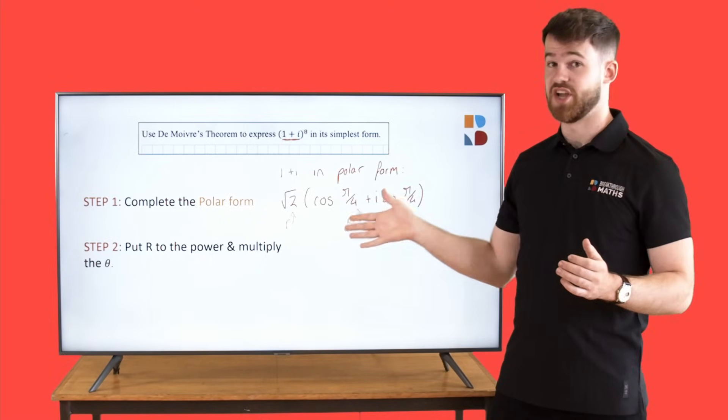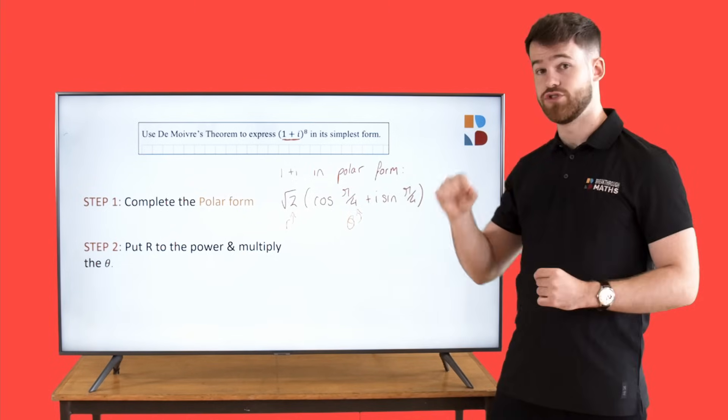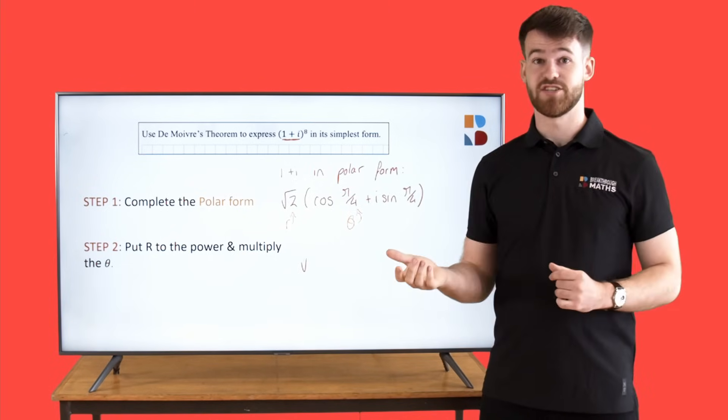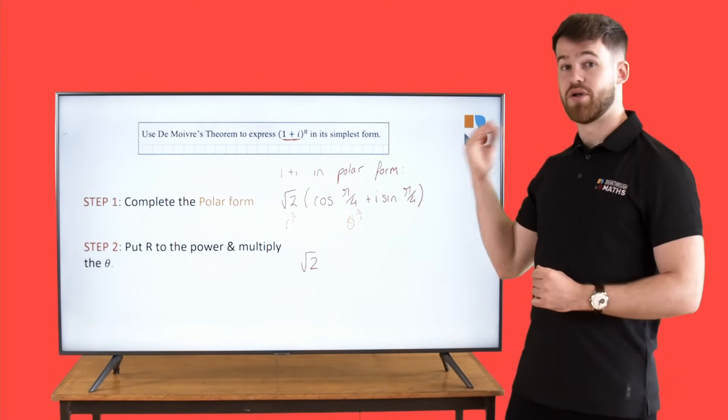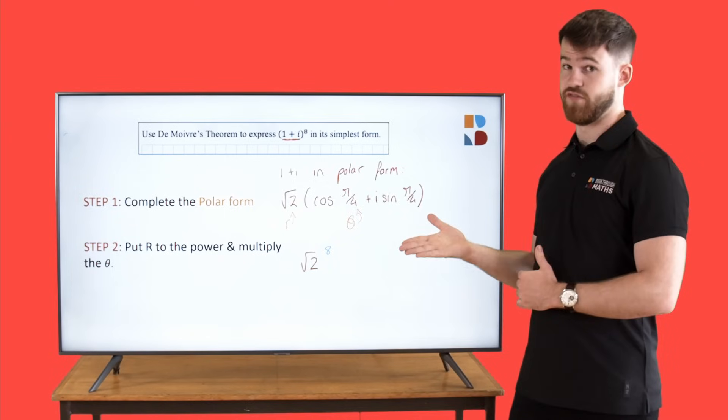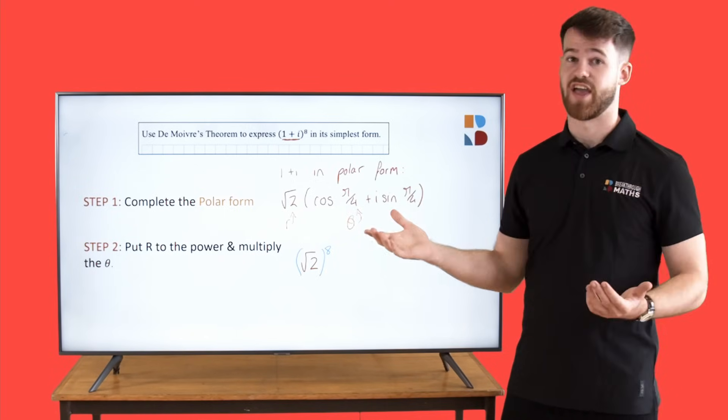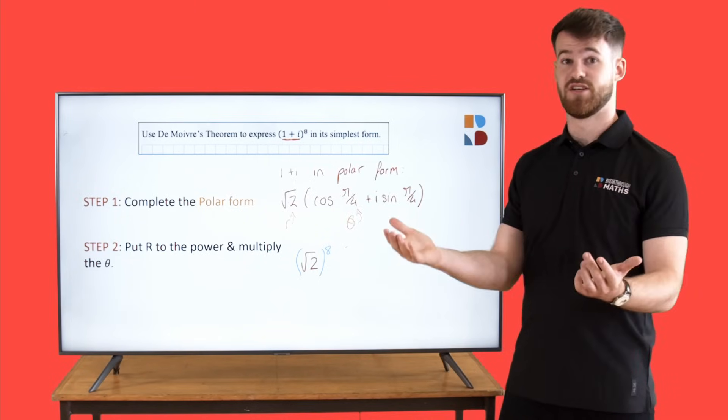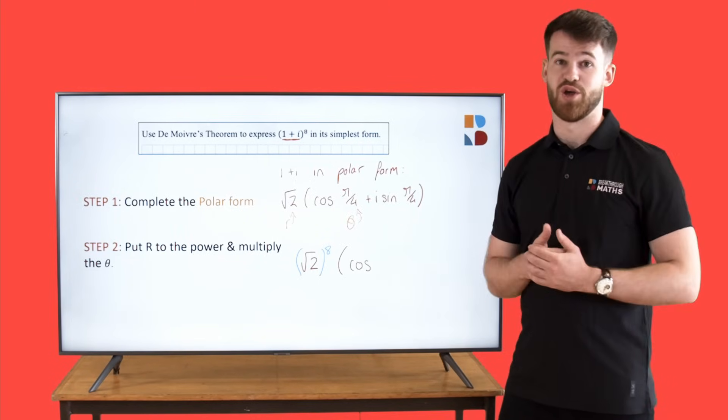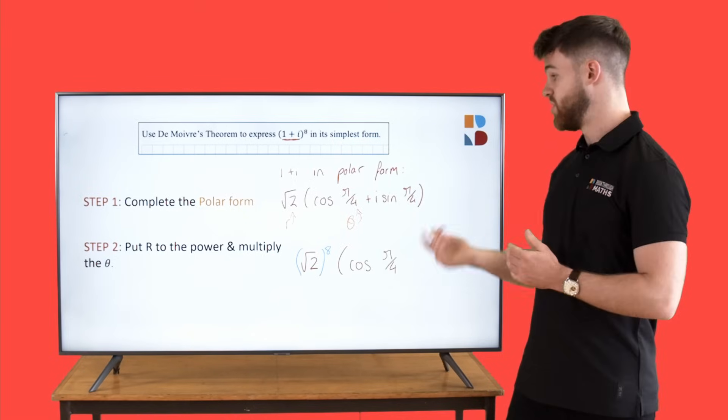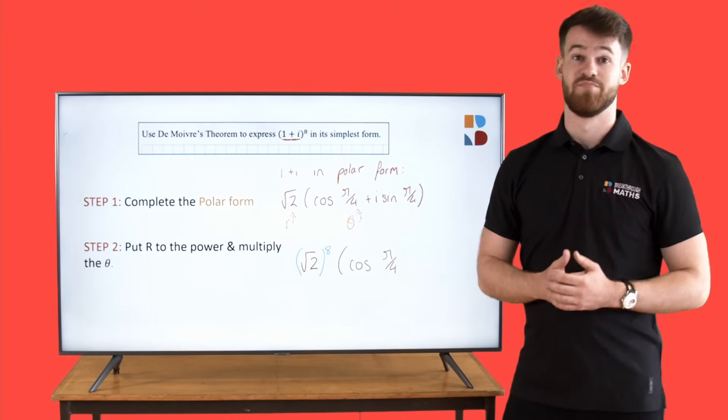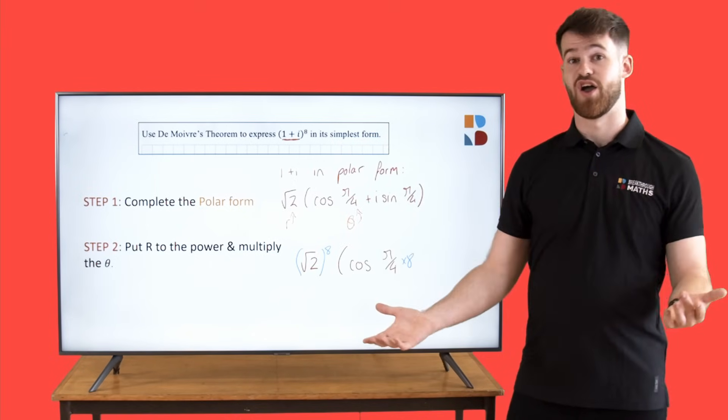So with our complex number here, we're going to put root 2 to the power of 8, and we're going to multiply pi over 4 by 8. So root 2 to the power of 8, times cos of 8 times pi over 4, plus i times sin of 8 times pi over 4.